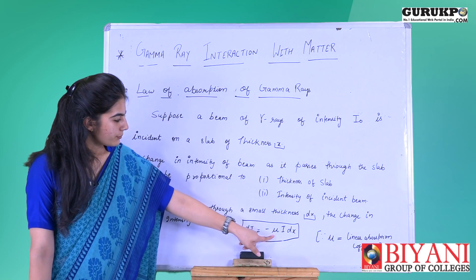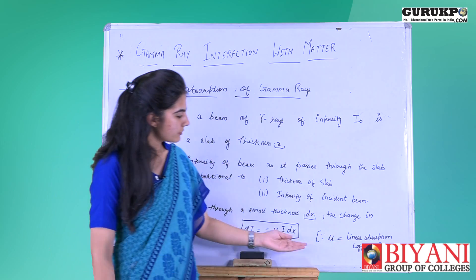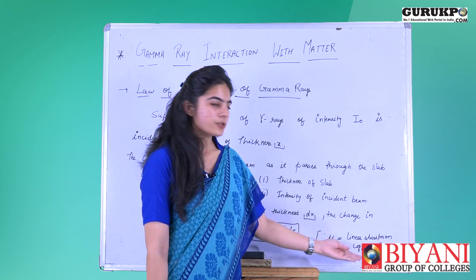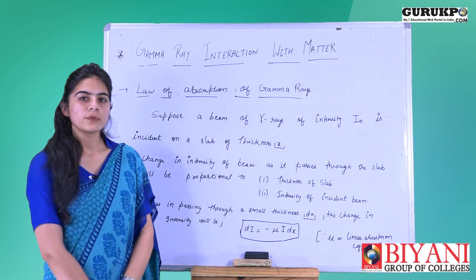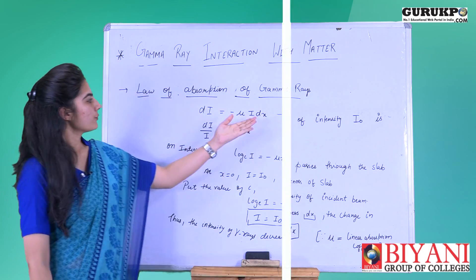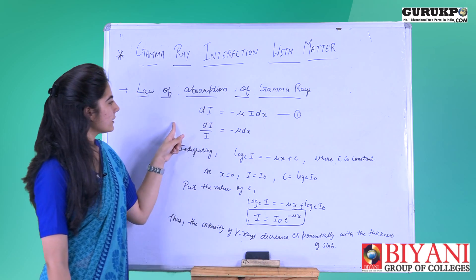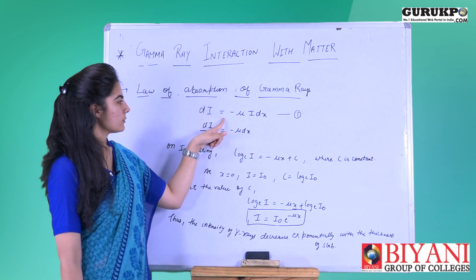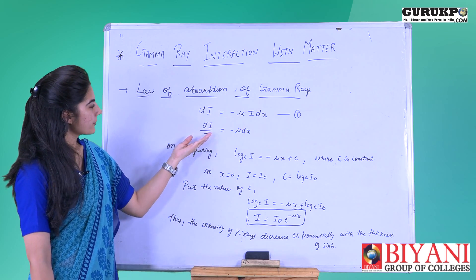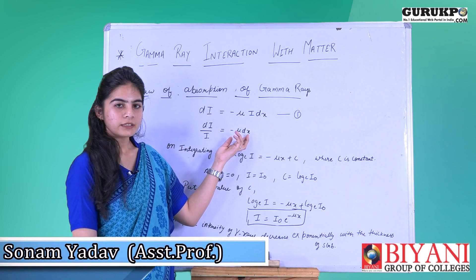Here μ is the linear absorption coefficient, which is a constant. For a small thickness dx, the change in intensity is given as dI equals minus μI dx. After separating the variables, we get dI/I equals minus μ dx.